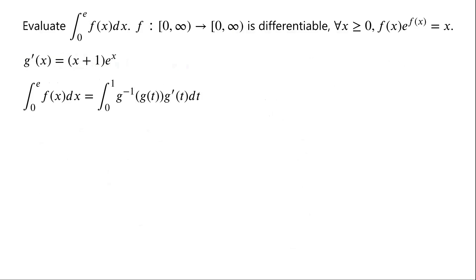The inverse function of g of g of t is just equal to t. And g'(t) equals (t+1) times e to the power of t. So the integral equals the integral from 0 to 1 of t times (t+1) times e to the power of t, dt.